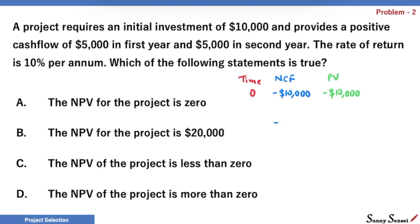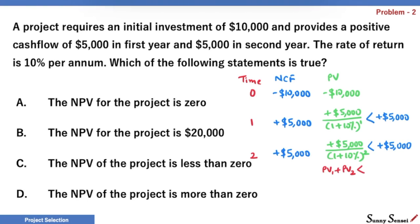We have positive cash flows of plus $5,000 in year 1 and year 2. The present value is always less than the future value because we divide the future value with a number that is more than 1 to get the present value. So, present value for both year 1 and year 2 is less than $5,000. The sum of these two is definitely less than $10,000.